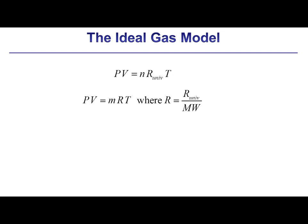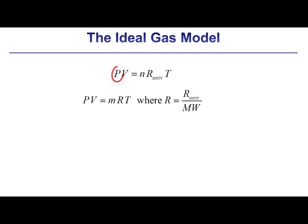An ideal gas is defined as a fluid that obeys the ideal gas equation of state, which is given here on a molar basis. P here is absolute pressure, V is volume, N is the number of moles of gas, R_universal is the universal gas constant which does not depend on the type of gas, and T is absolute temperature.